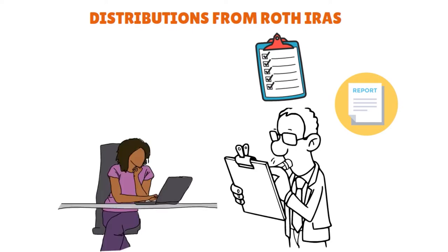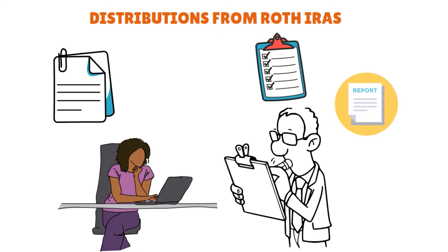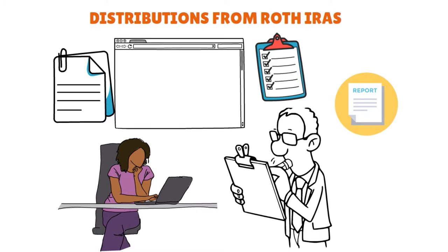It's very important to understand the concept of recharacterizations. An individual who recharacterizes a Roth conversion or an IRA contribution must attach a letter or statement to their tax return explaining the recharacterization. In this letter, include how much is attributed to the contribution or conversion, the amount attributed to earnings, and indicate if there was a loss. The verbiage depends on whether the individual is recharacterizing from a traditional IRA to a Roth IRA or vice versa, or whether the individual is recharacterizing a Roth conversion. For more information, see the IRS website.